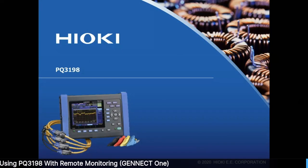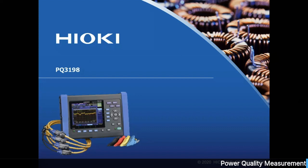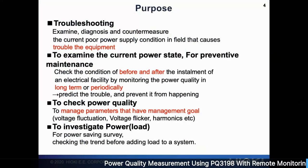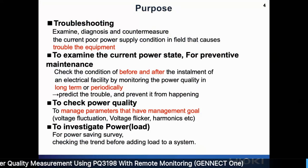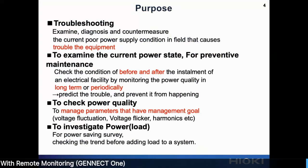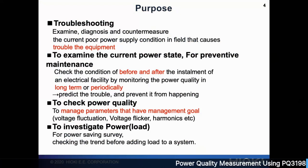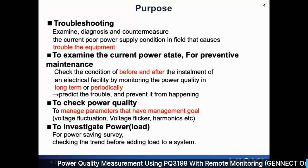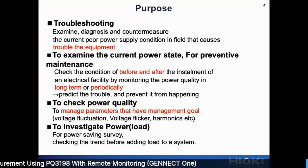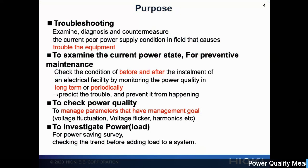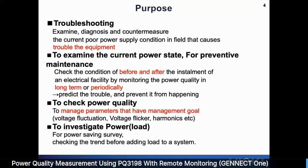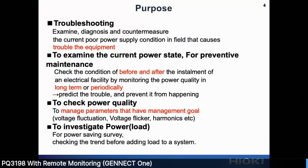This is the PQ3198 — the latest model that was recently launched. PQA is usually used for doing troubleshooting when you have problems. For example, if you have a power trip, you need to identify what is the cause of that power trip. It's a very good preventive maintenance tool. For example, for HVAC installers, before you install the aircon, you will usually want to do a before-installation measurement to check on the electrical supply, whether there are any problems.